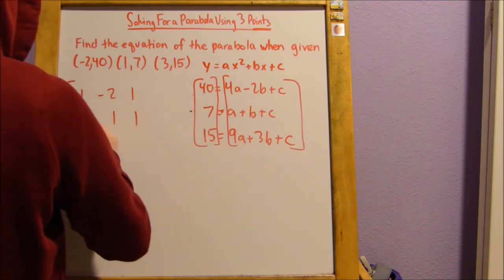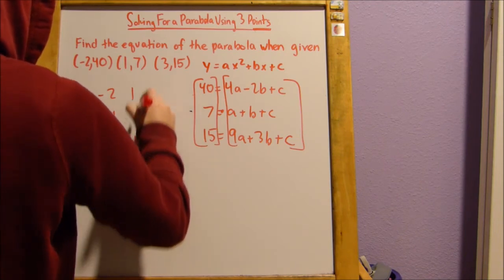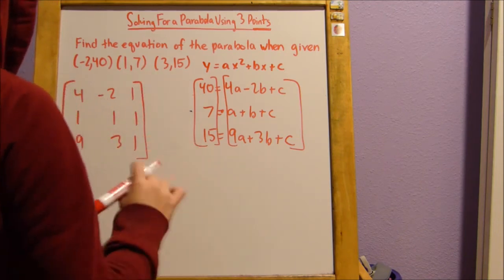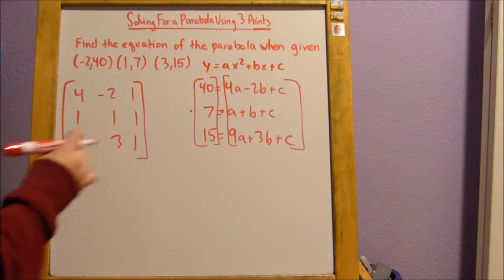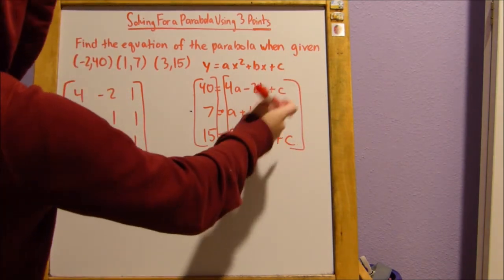Coefficients here are 9, 3, and 1. Now you notice, any time there isn't a coefficient, like in the case of c in all these equations, you just put 1 because it's like saying 1c.